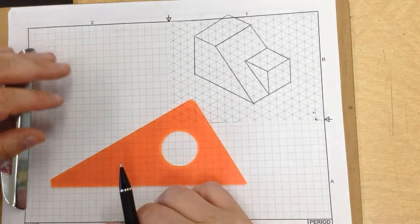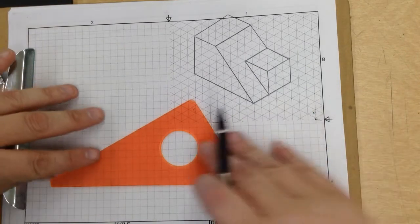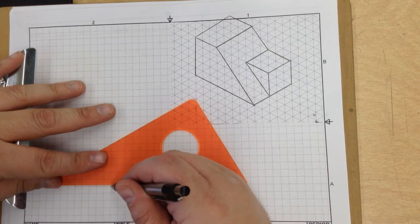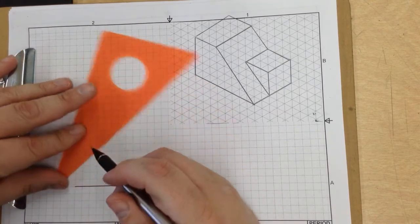1, 2, 3, 4, 5, 6, 7, 8 wide. So 1, 2, 3, 4, 5, 6, 7, 8 wide. That is my base line.